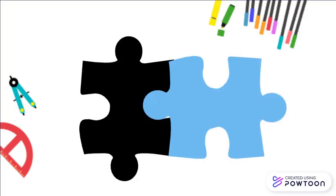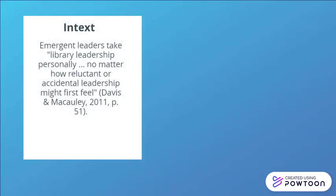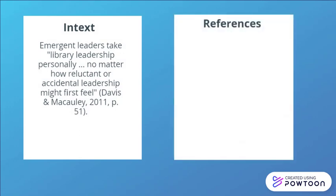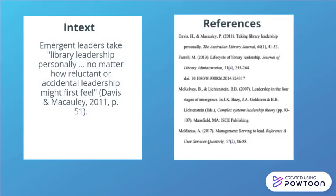Citations are two pieces: an in-text citation and a reference list. An in-text citation is a short citation within the body of your paper that refers a reader to the full reference at the end of your paper. Your in-text and reference list citations should match.